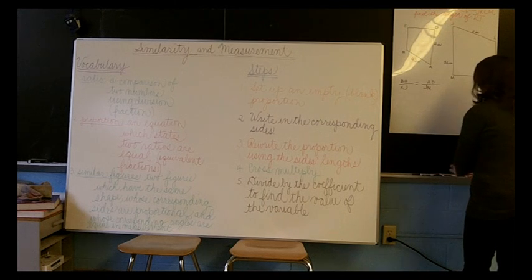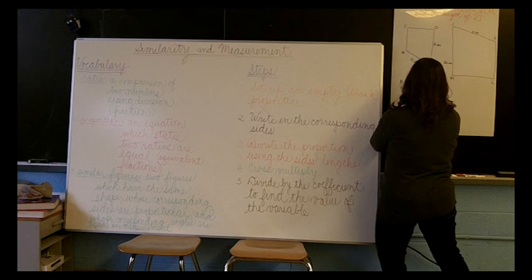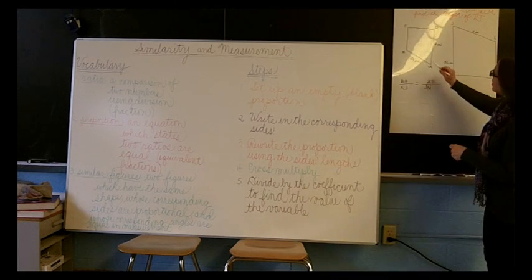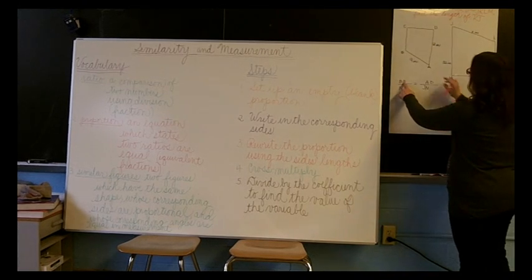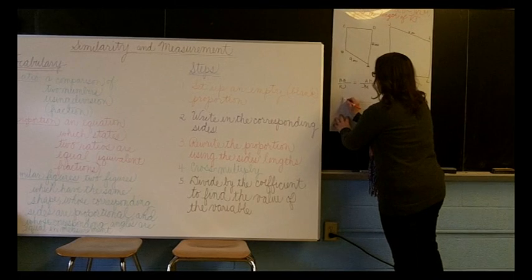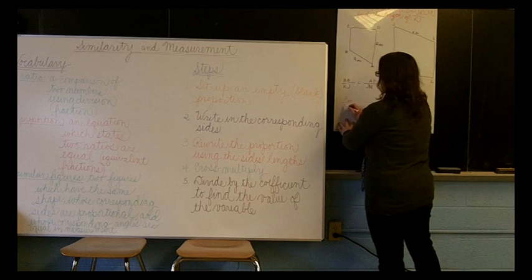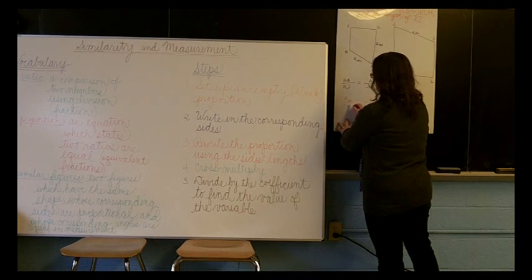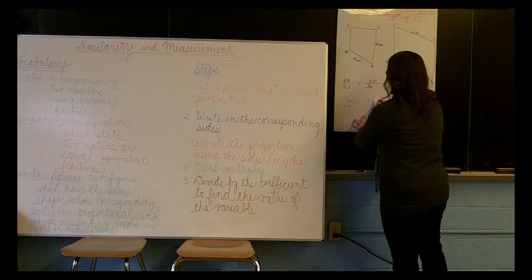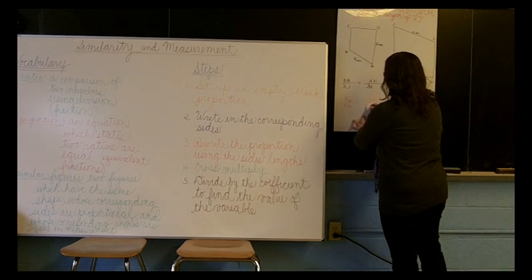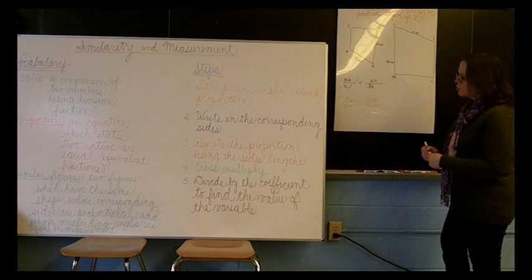So now what we're going to do is rewrite another empty proportion, but this time we're going to fill in the lengths of the sides that we know. So side BA is 9 inches long, and we don't know what KJ is, so we'll call that X. Side AD is 12 inches long, and side JM is 32 inches long.